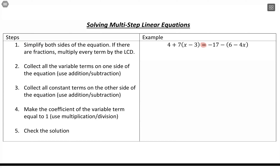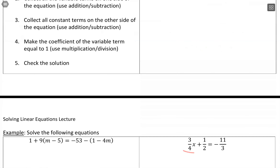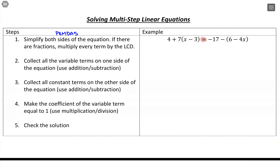Simplify both sides of the equation using our order of operations — think about PEMDAS. If there are fractions, multiply every term by the least common denominator. I don't have fractions in this case, so we're going to skip over that. However, we're going to go through two examples after this, and one of them will deal with fractions, so I'll show you that step.